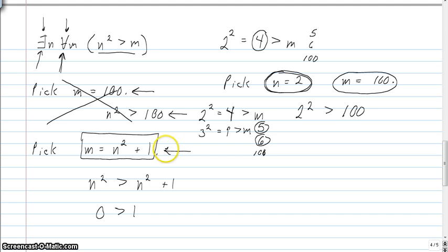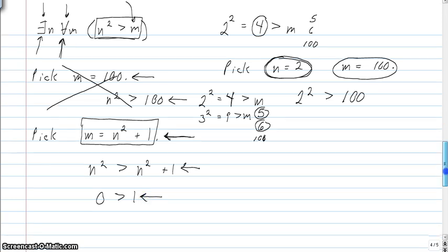So then what I did from there was I just substituted, I went to my formula here, and I substituted in n squared plus 1, which got me to this step. And then I just subtracted n squared from both sides, just to get to a point where I've got a statement that is obviously false.